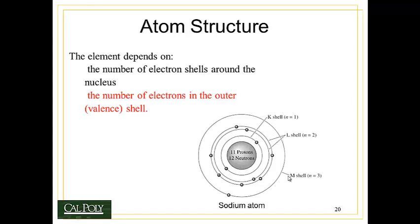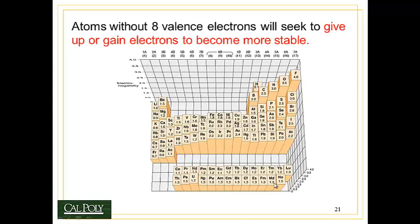For example, this is a sodium atom. You can see that it has K shells, L shells, and M shells surrounding the nucleus. The outermost shell is the M shell, which has one electron in its outermost shell. That's why sodium shows up in the first column of the periodic table.